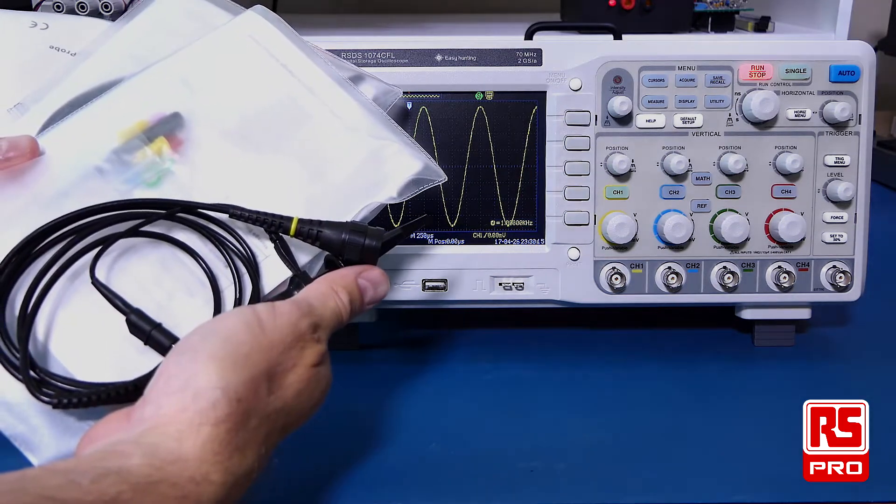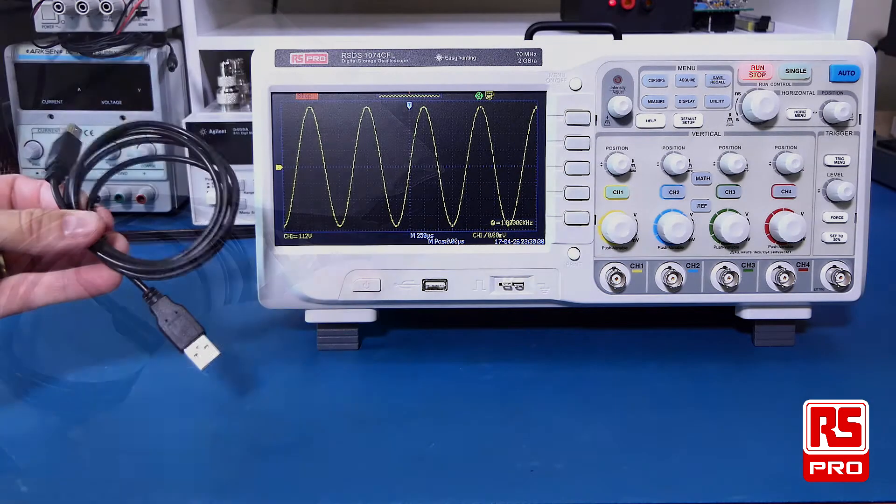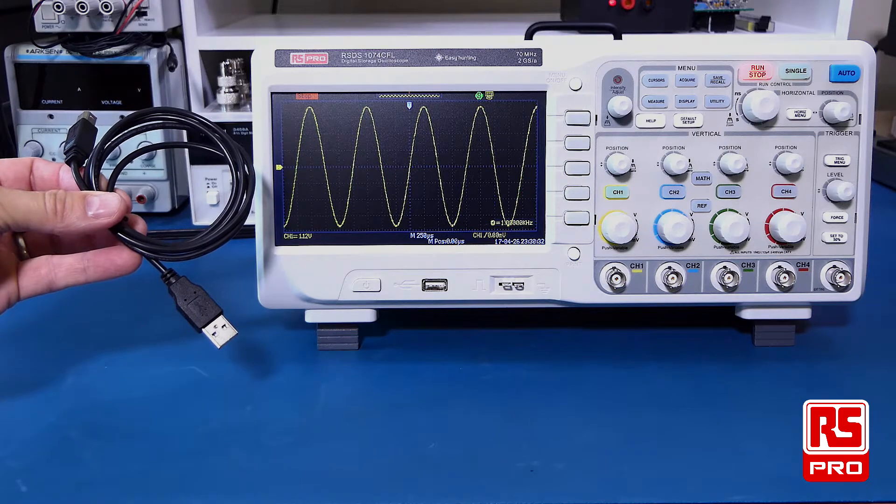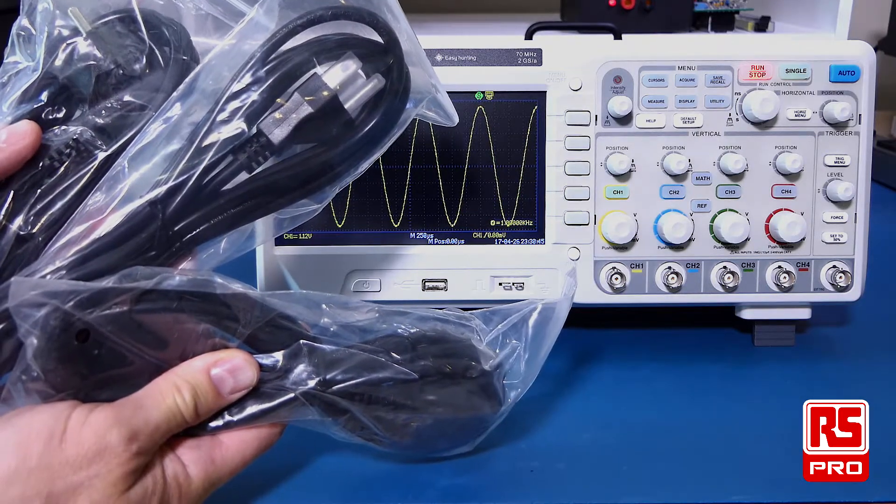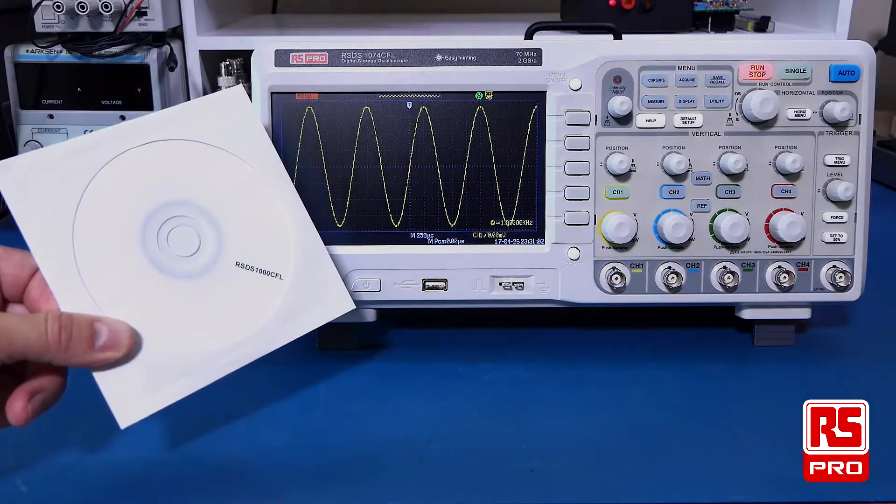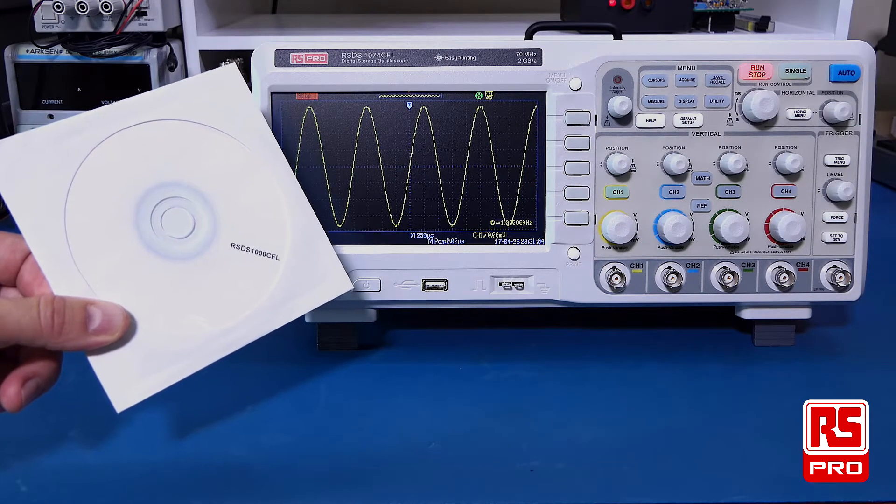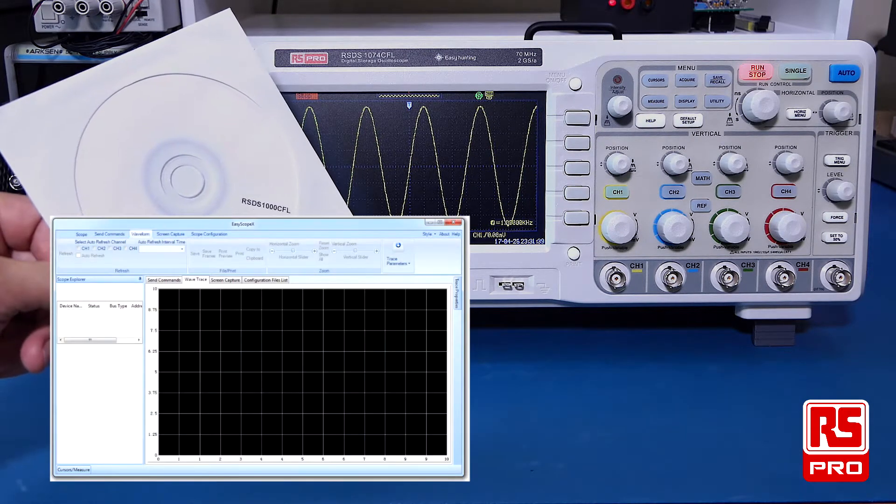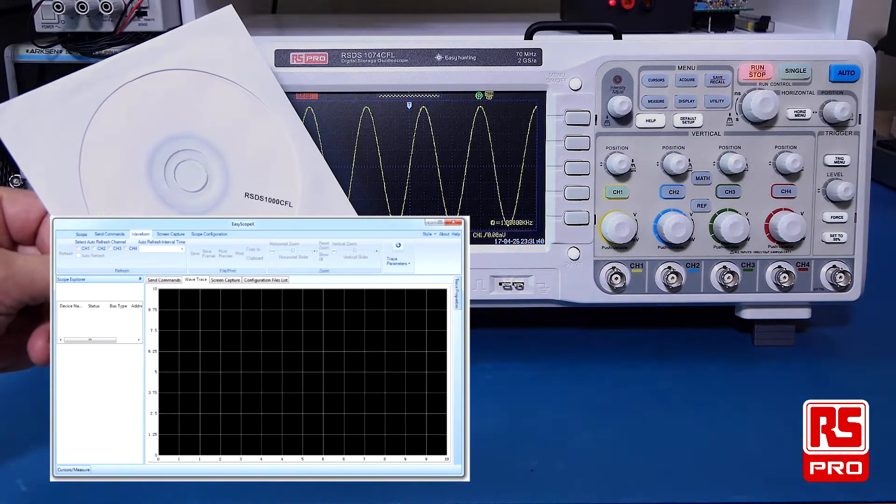There are four passive probes for each of the analog channels, a USB cable for host connectivity to a PC, several international power cords, a CD with a quick start guide and a detailed user manual, and PC-based software to control the oscilloscope remotely.